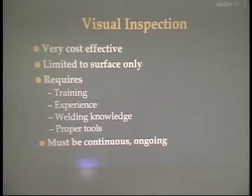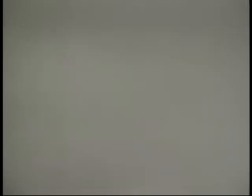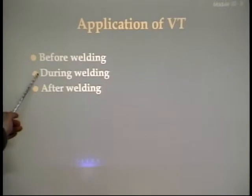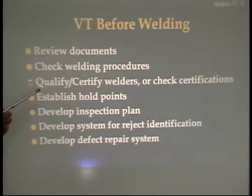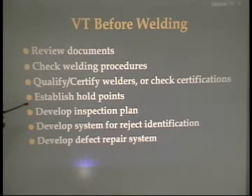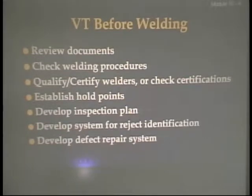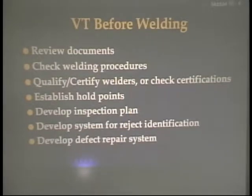There's a lot to accomplish before you start. The blue box on page 10-3 lists items for before, during, and after welding. We'll review documents, check welding procedures, qualify and certify welders, and establish hold points. If you look on page 10-3 under Visual Inspection, it says since the welding inspector's responsibilities can be extensive and will occur at various stages of the fabrication sequence, a helpful aid is an inspection checklist.